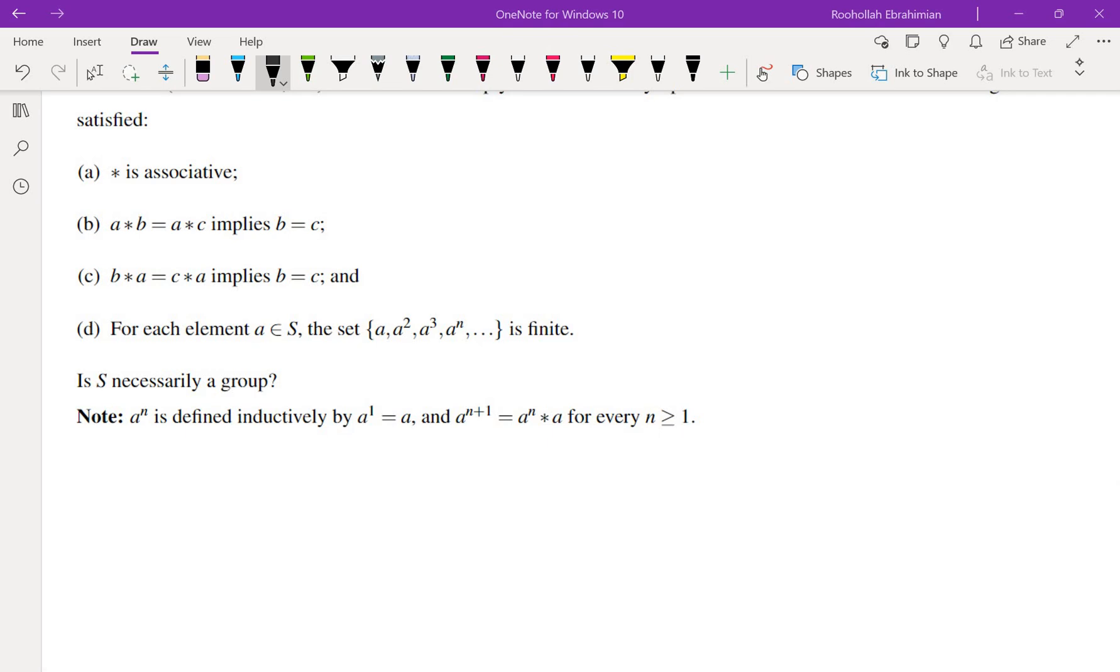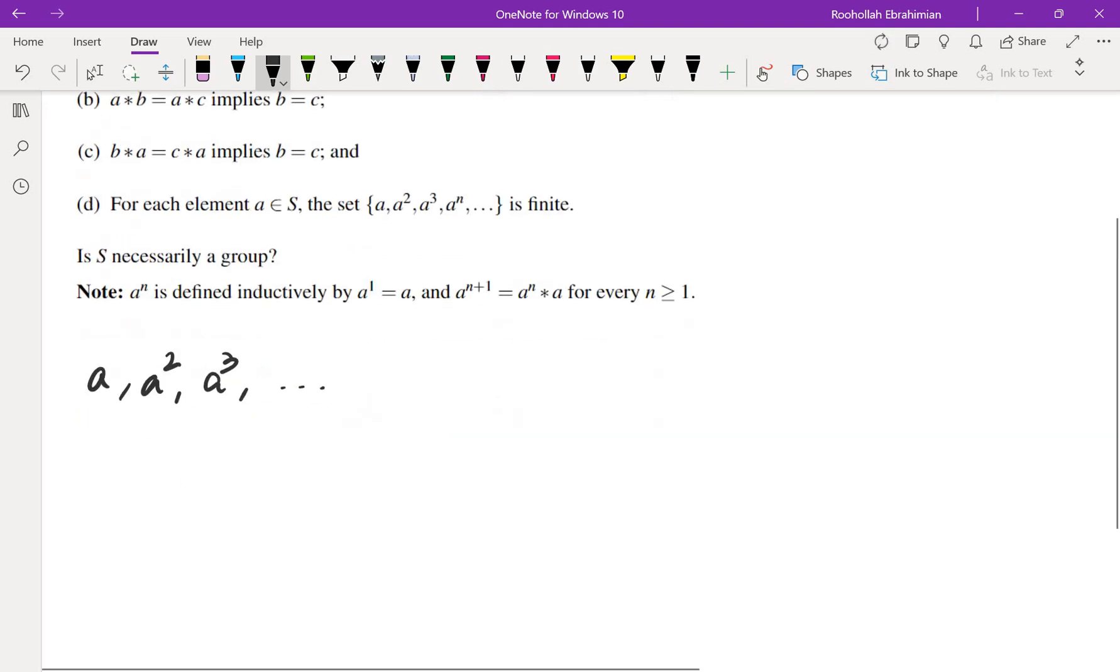What does it mean that you have a cycle? It means if you look at a, a squared, a cubed, etc., at some point there's going to be a repetition. So let's say a to the power of 15 is equal to a to the power of 27. Something like that. But if that happens...